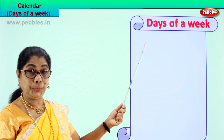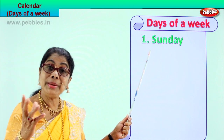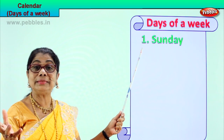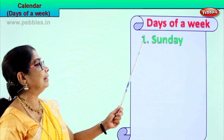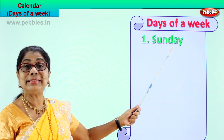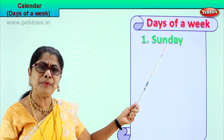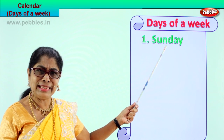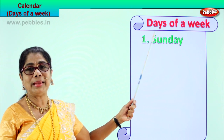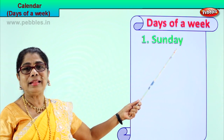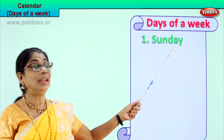How many days are there in a week? There are seven days. Which is the first day of the week? The first day of the week is Sunday, and you love the first day because it's a holiday. Spell Sunday: S-U-N-D-A-Y. First day of the week is Sunday.